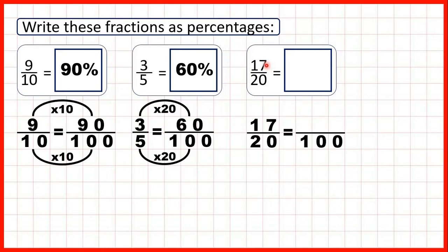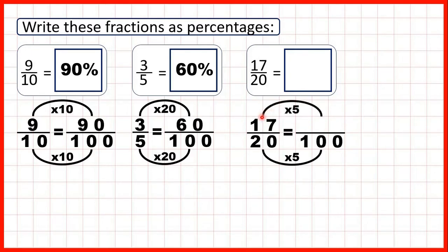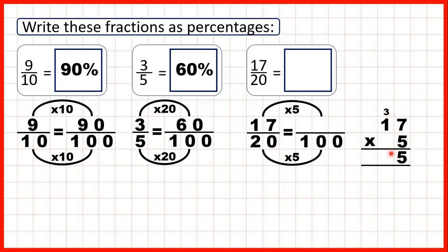Now we have 17 twentieths. Again we can find our equivalent fraction: 20 times 5 is 100. So to get our percentage we need to work out 17 times 5. We can use short multiplication for this: 7 times 5 is 35, so write 5 and carry 3; 1 times 5 is 5 plus 3 is 8. So 17 twentieths is equivalent to 85 hundredths, which means it's the same as 85 percent.